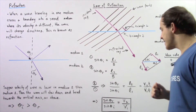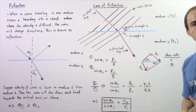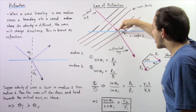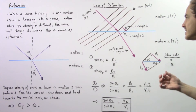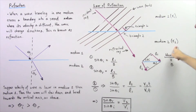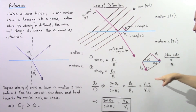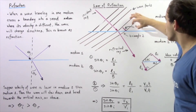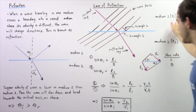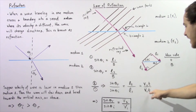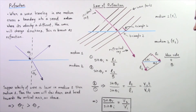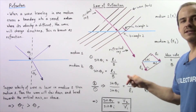L2 is the distance the refracted ray travels, which equals the velocity V2 multiplied by time. Likewise, L1 is the distance the incident ray travels, equal to V1 multiplied by time. Since the time values are the same, they cancel, and we are left with: sine of the angle of refraction divided by sine of the angle of incidence equals V2 divided by V1.